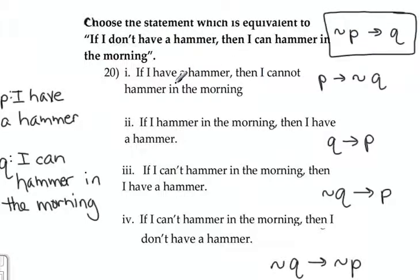And then if I go through parts 1, 2, 3, and 4, and translate the statements to symbolic form, I'll have if P, then negation of Q. If Q, then P. If negation of Q, then P. And this one would be if negation of Q, then negation of P.